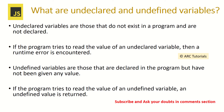What are undeclared and undefined variables in JavaScript — or what is the difference between them? Undeclared variables are those that do not exist in a program and are not declared. If a program tries to read a particular value and it is undefined or undeclared, then there is a runtime error which you can see in the browser console. If the program tries to read the value of an undefined variable, the error message that comes is 'undefined value'.